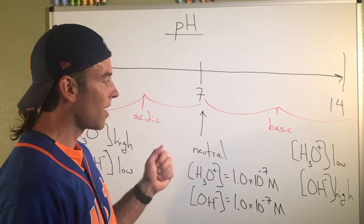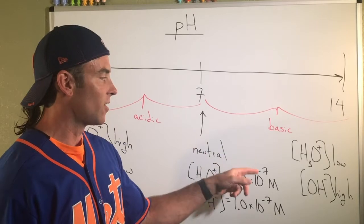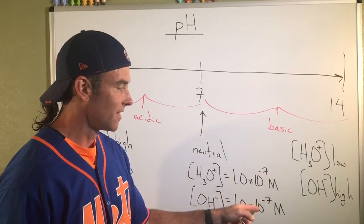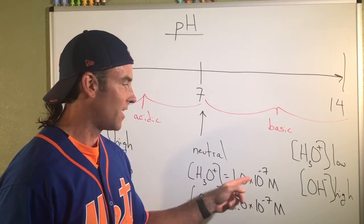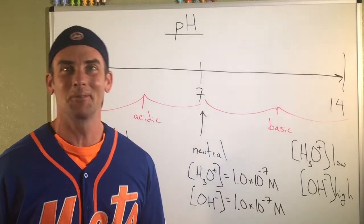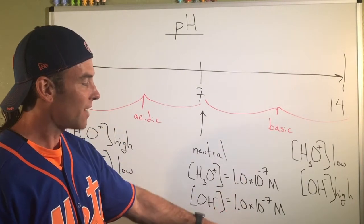And so really what you're talking about in terms of all of these concentrations, the fact is your exponents always have to kind of add up to 14. So if this is negative sixth, that's negative eighth. If that's negative fifth, that must be negative ninth. So that's what that means.